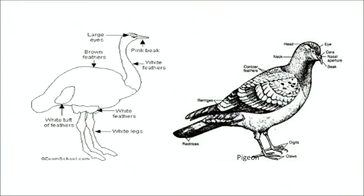Eggs have much yolk and a calcareous shell. Examples: ostrich, kiwi, Columba (pigeon), and crow.